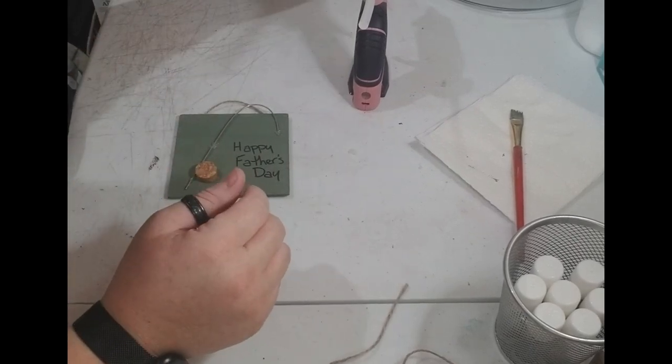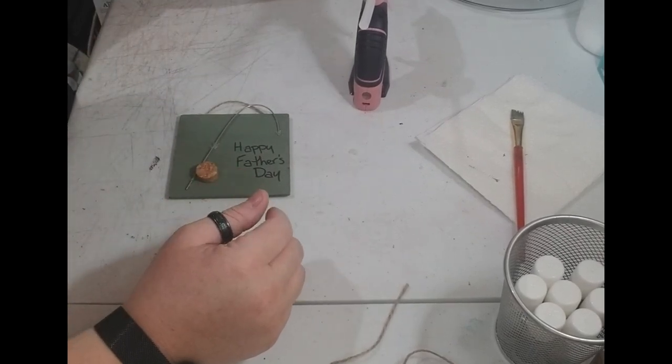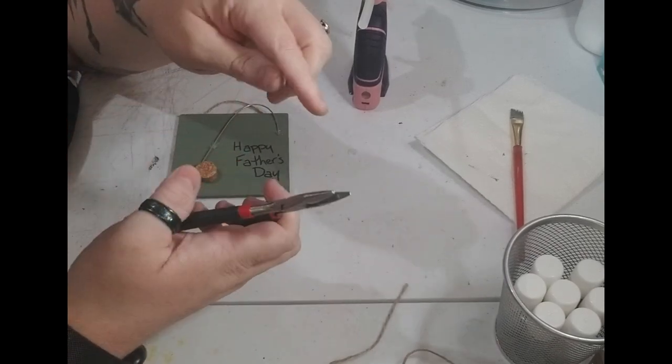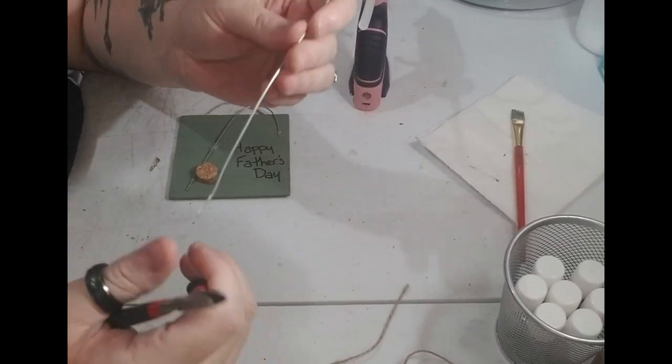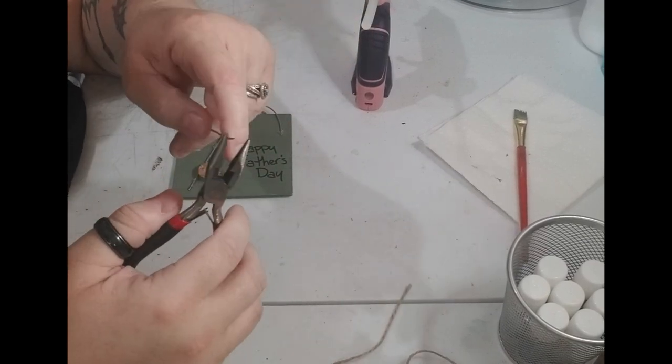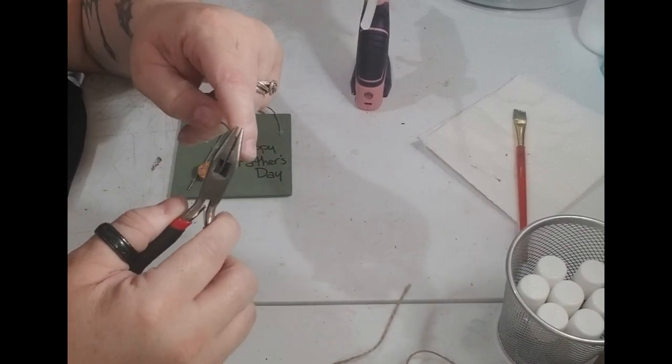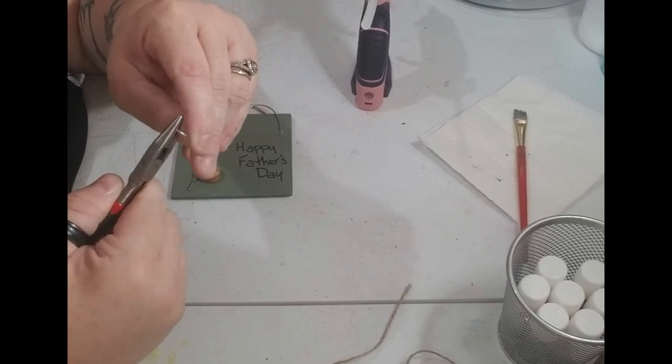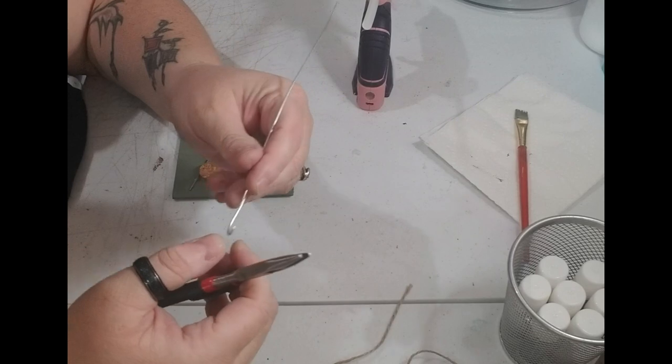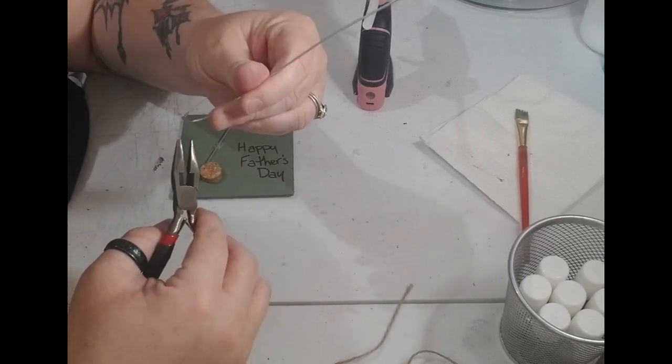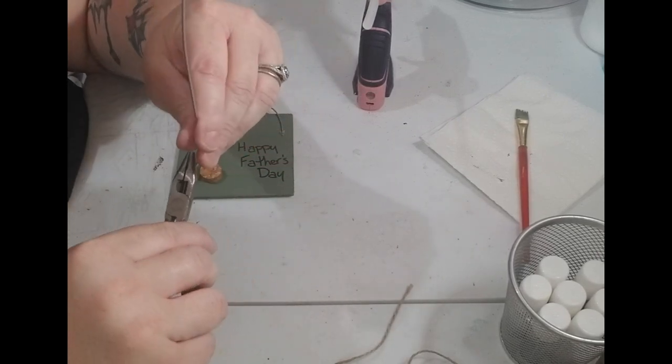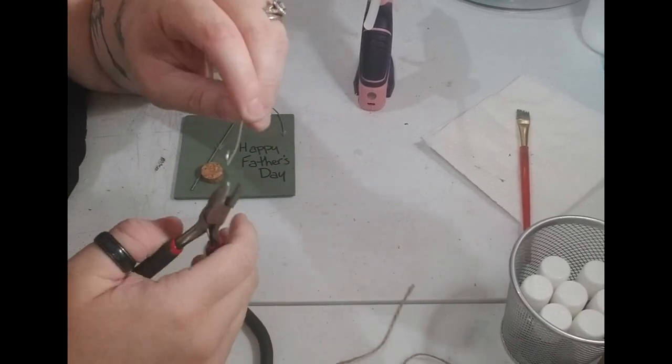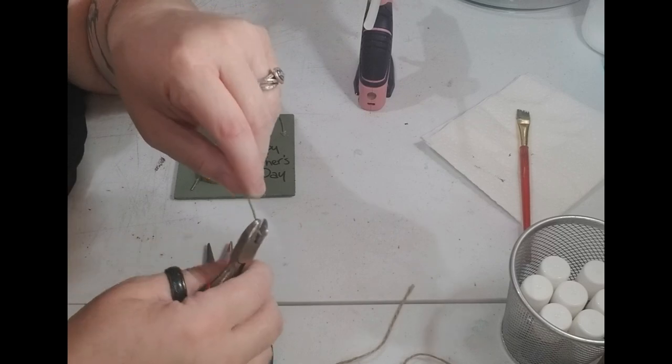My mom gave me an idea and I'm gonna try it and see if it works. She said to use this floral wire and just try to make a little tiny hook, nothing big. It just helps to give it more of a fishing pole feel. I'm gonna cut about how high I want it.